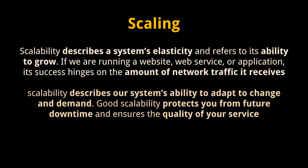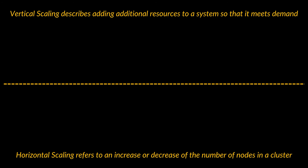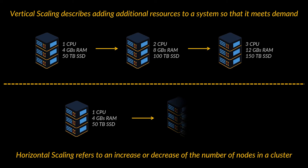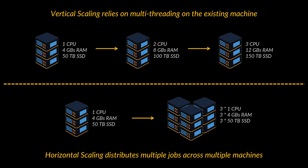When it comes to implementing scalability, that's where horizontal and vertical scaling come in. When scaling is mentioned — whether for databases, clusters, or servers — it will fall under one of these two categories. Vertical scaling, aka scaling up or down, describes adding additional resources to a system so that it meets demand. Horizontal scaling, aka scaling in or out, refers to an increase or decrease in the number of nodes in a cluster or system to handle a change in workload. Vertical scaling means adding more power to your current machines — for instance, upgrading the CPUs in use. Horizontal scaling means adding more nodes of the same size, distributing multiple jobs across multiple machines over the network to reduce the workload on each machine. Vertical scaling relies on multi-threading on the existing machine to handle multiple requests at the same time.